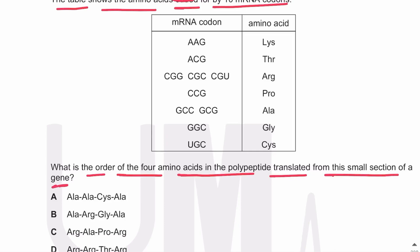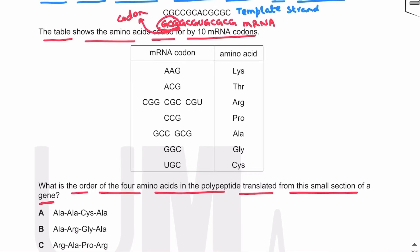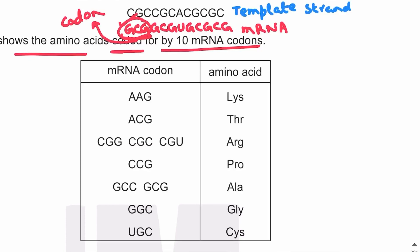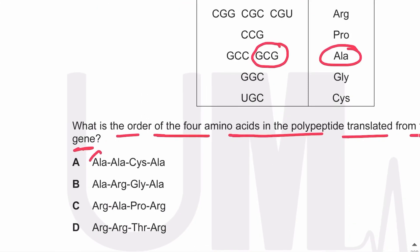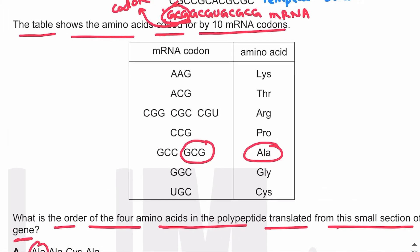We need to give the order of the sequence of four amino acids in the polypeptide translated from the gene shown above. Looking at the codons and the amino acids they code for: the first codon is GCG, and GCG codes for Ala. So the first amino acid is Ala, which means options C and D are wrong.